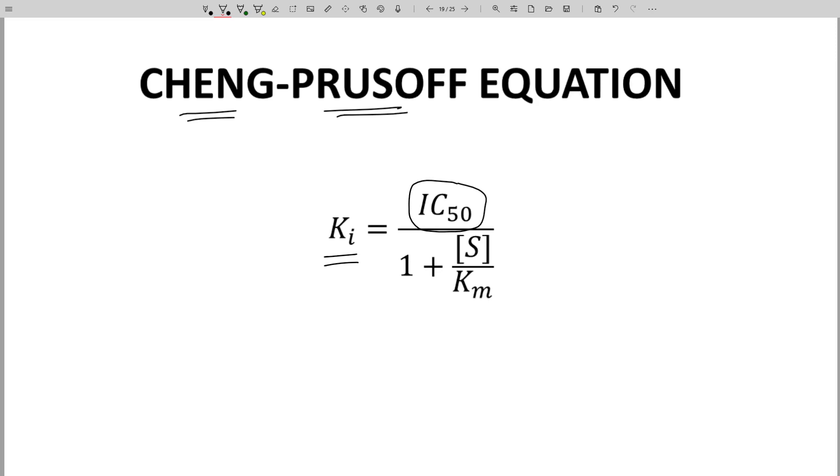Ki is the inhibition equilibrium constant. It is the dissociation equilibrium constant for an enzyme-inhibitor complex. Ki is a property of an enzyme and an inhibitor. It does not depend on other factors like substrate concentration. Ki is considered to be a more pure potency measure for a competitive reversible inhibitor.